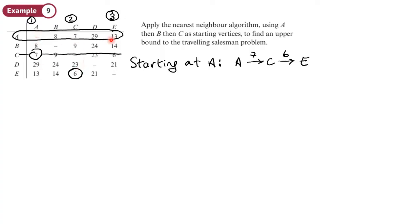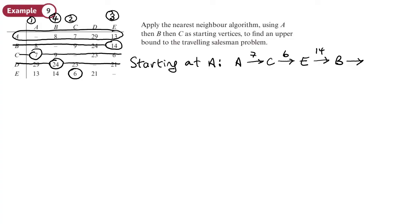The lowest weight that's left in column E is 14, which will take me to B — that's step four, weight 14. Then the only remaining option takes me to D with weight 24. And then I've got to go from D back to A, which is 29. So you can see that basically when you get to the end, you're forced to use certain edges or arcs — you don't have choices. The tour for this is A, C, E, B, D, A. And the weight of this tour is 7 + 6 + 14 + 24 + 29, which equals 80.